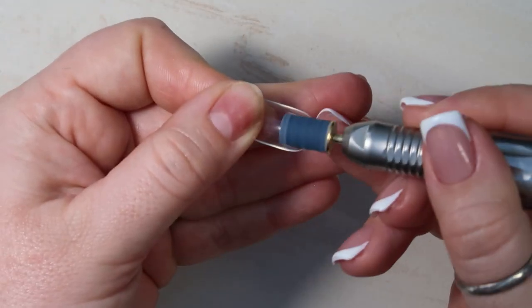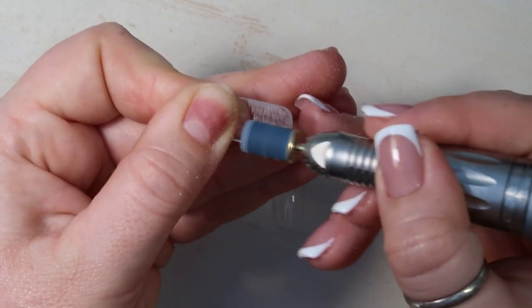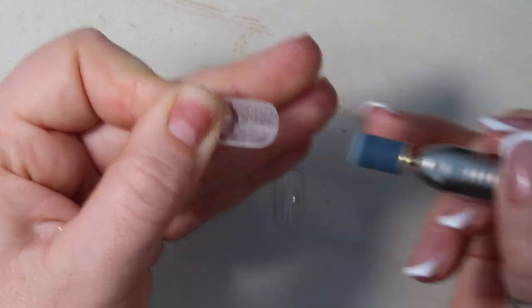I'm going to prep them using a sanding band on my e-file. I'm literally just going to buff the inner surfaces so that they last a lot longer once you've bonded them on.